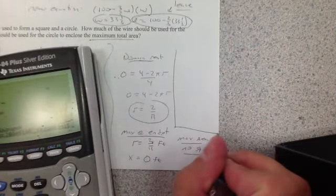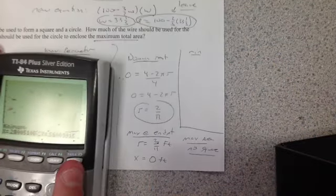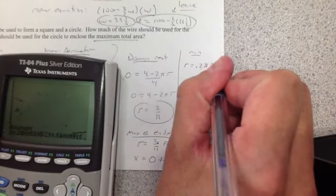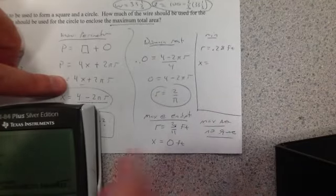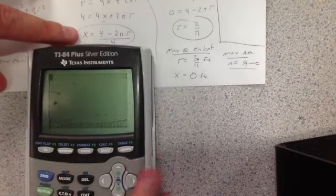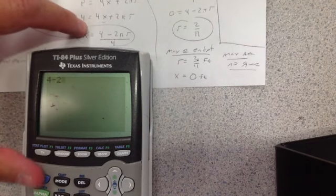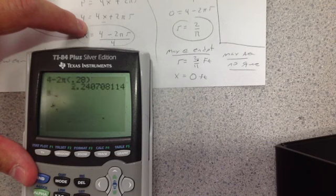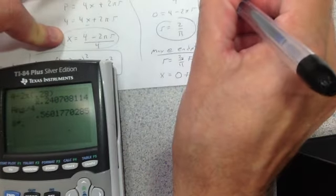So for minimum, and I'll go ahead and find that for you as well. To get the minimum, x or r is going to be 0.28 feet. Where x will be, just plug it in. Second quit. 4 minus 2 pi times 0.28. Enter. Divide that by 4. Where x will be 0.56 feet.